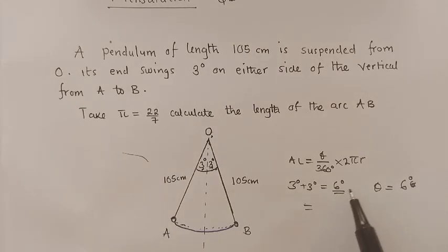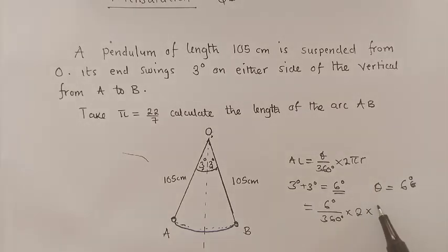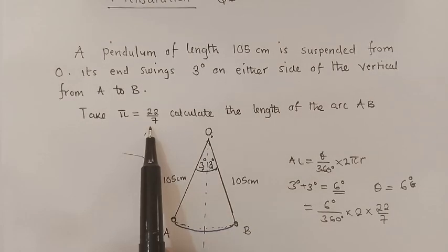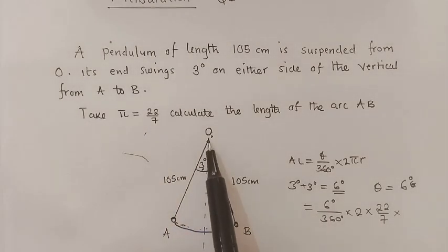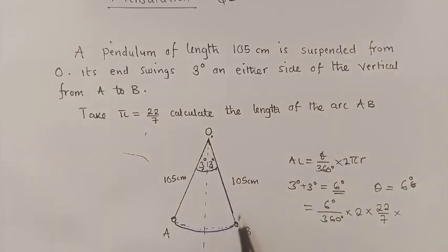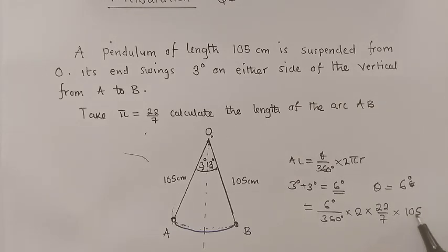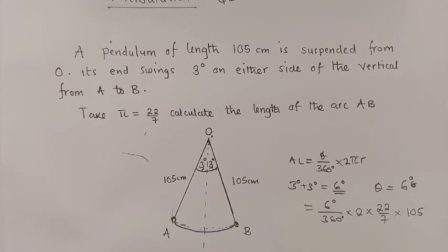Now we can plug in the values: six degrees over 360 degrees times two times 22 over 7 pi. They've said we use 22 over 7. Times the radius. The radius will be the length from here to here which is 105. That would be our radius which is 105.